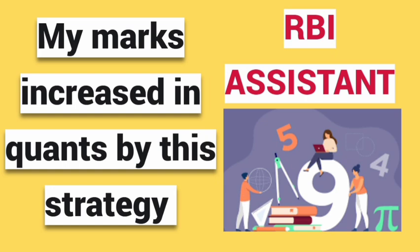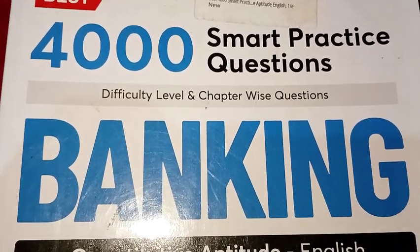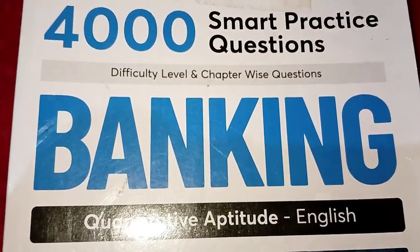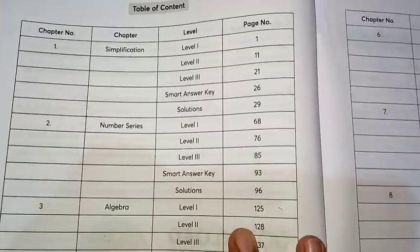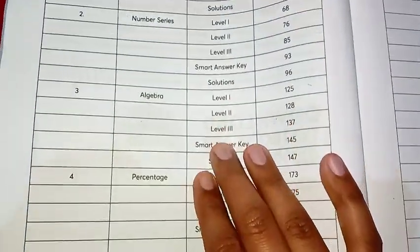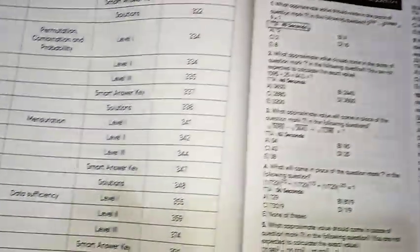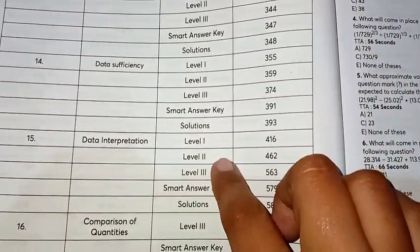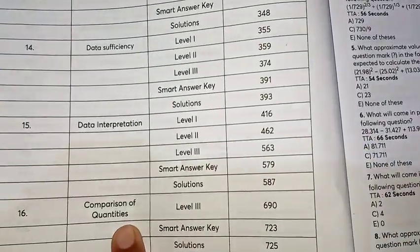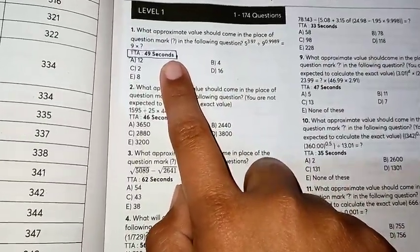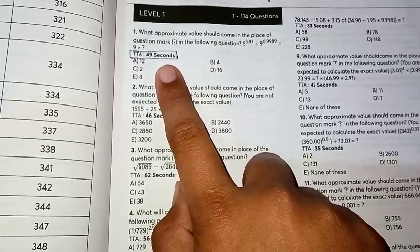If your basics are clear, you have to practice questions on a daily basis. You can use this book — it's a 4000 questions book, available in both English and Hindi. All the chapters are covered: simplification, number series, algebra, percentage, ratio, proportion, average, and more. Data interpretation sets are also given level-wise — level 1 is for prelims, and levels 2 and 3 are for mains. Quantity-based questions are also included, along with the ideal time in which you should solve each question.